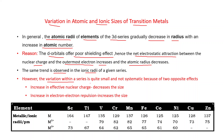However, the variation within a series is quite small and not systematic because of two opposite effects. The first is increase in effective nuclear charge — because D orbitals offer poor shielding effect, effective nuclear charge increases, resulting in a decrease in size. But at the same time, electrons enter D orbitals, causing increased electron-electron repulsion, which results in an increase in size.